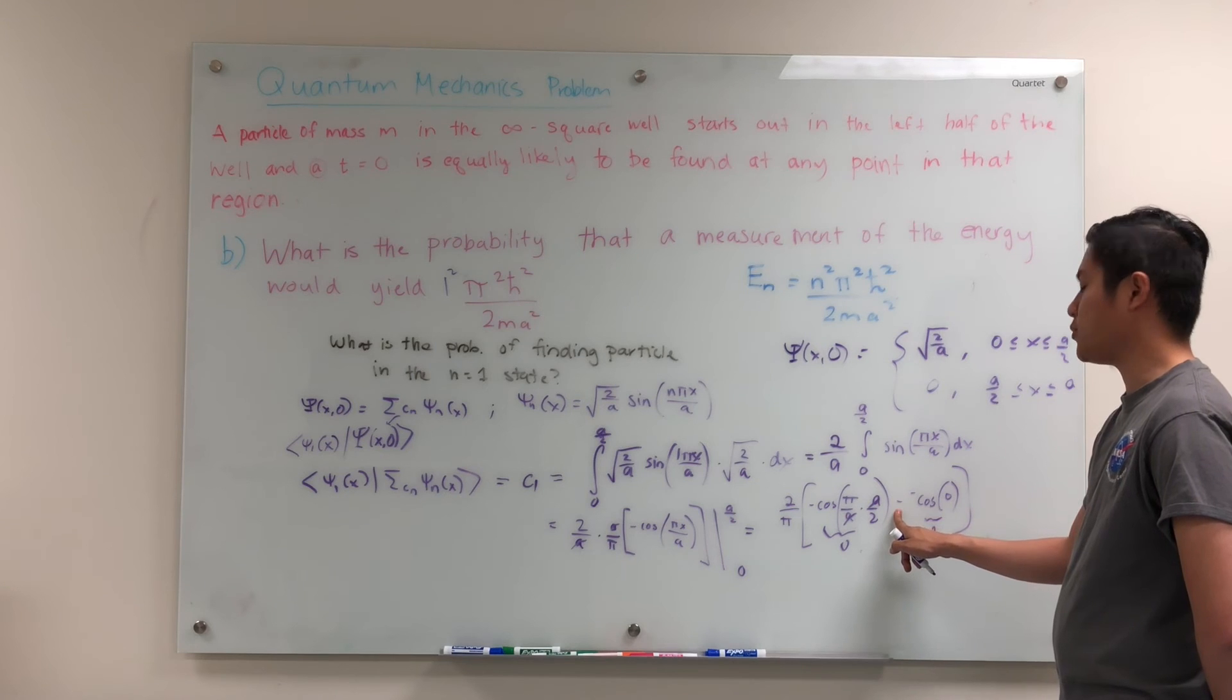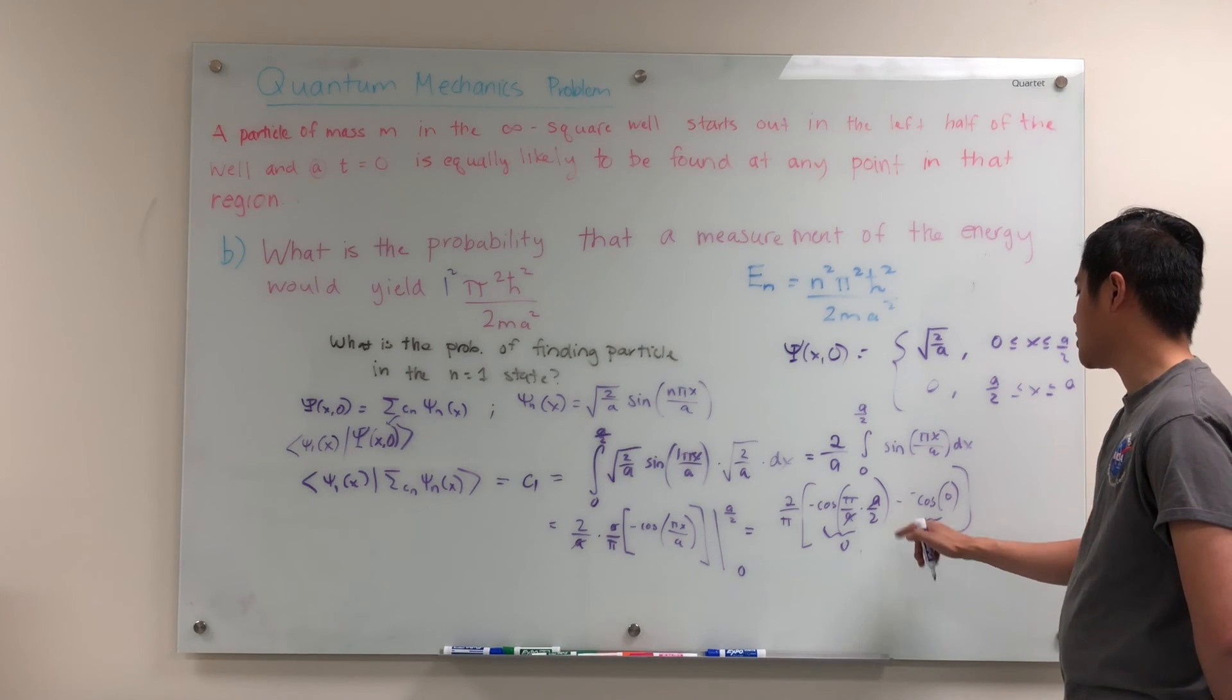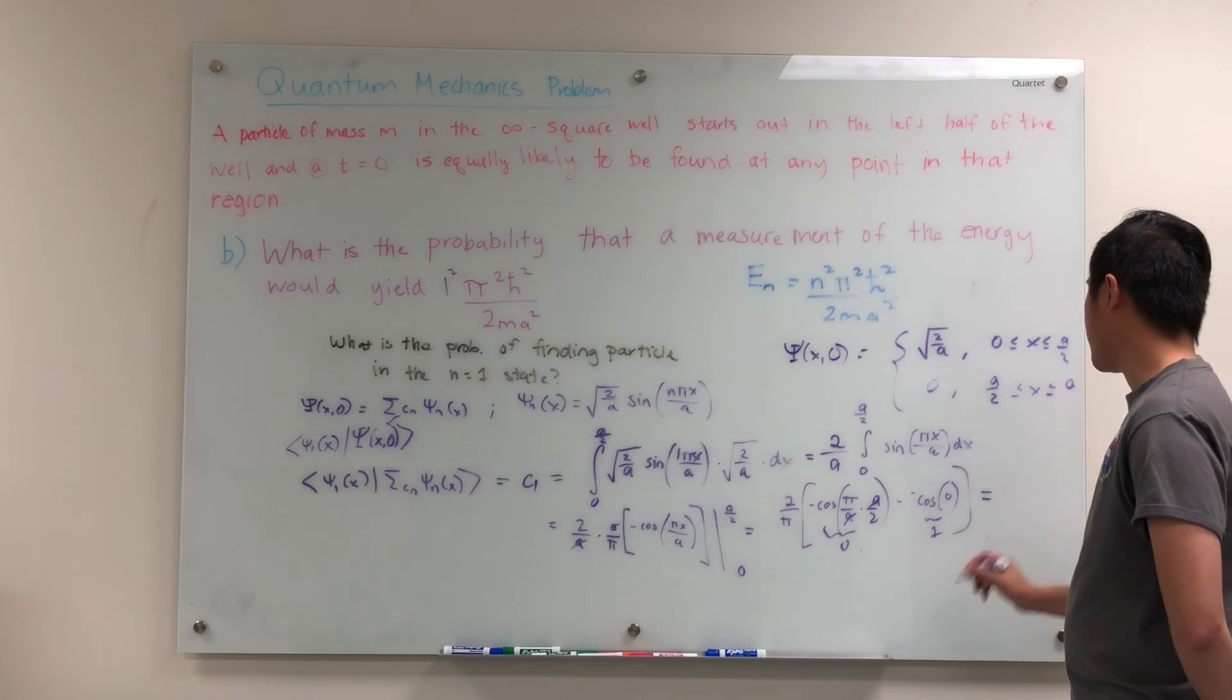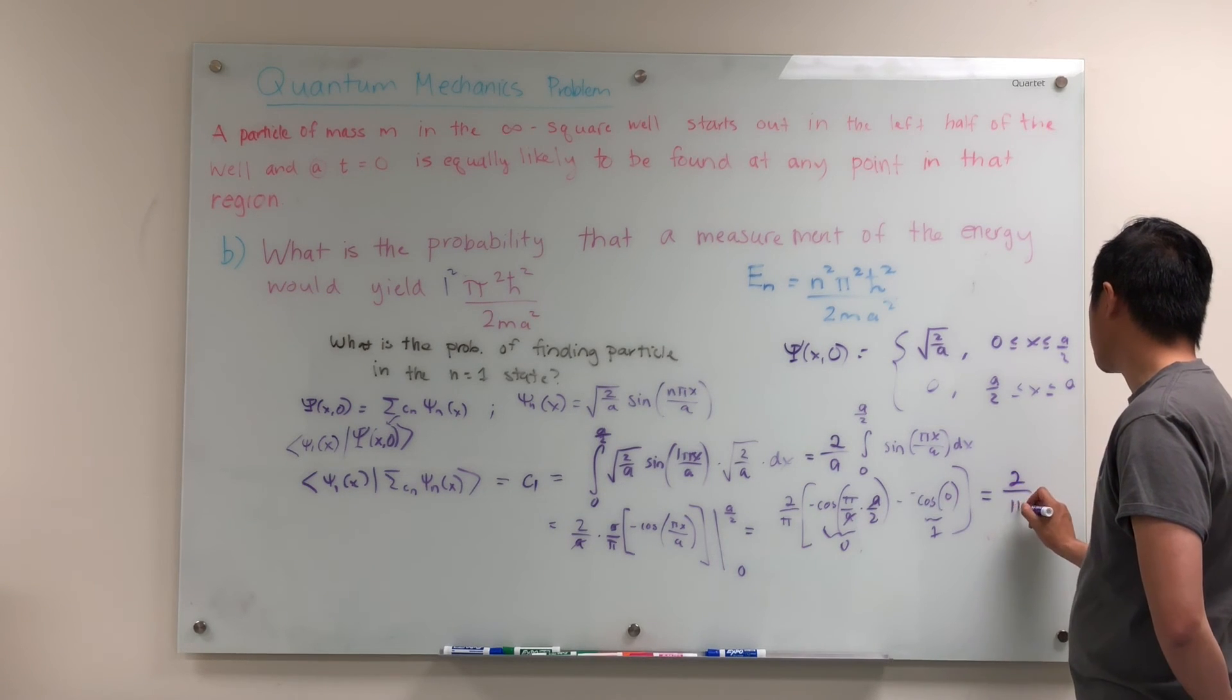Cosine of 0 is just 1. Minus is a minus 1. Another minus, another minus is a plus 1. So this entire thing is just 2 over pi times 1, which is just equal to 2 over pi.